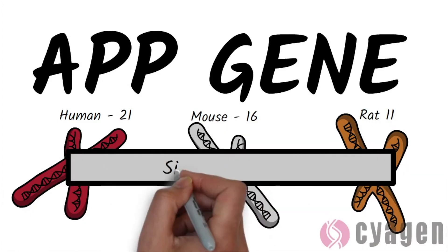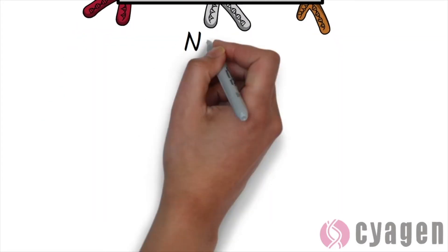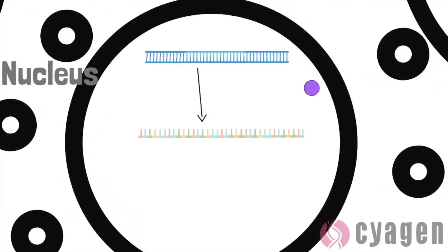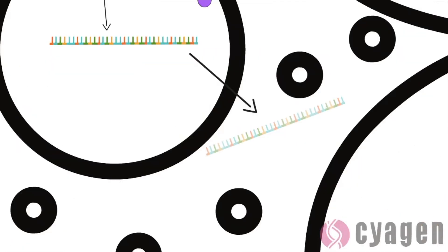In each organism, the gene has similar roles. The APP gene codes for the amyloid precursor protein, which undergoes translation in neuron cells.